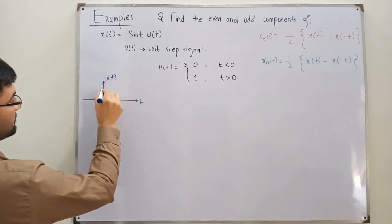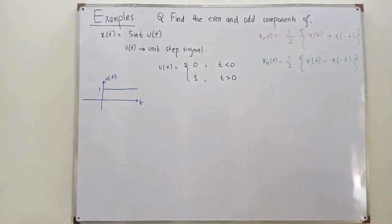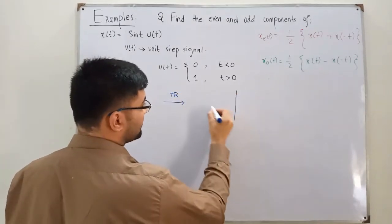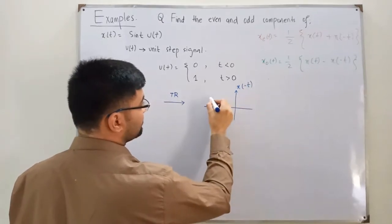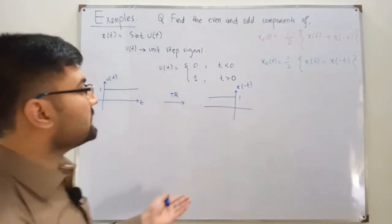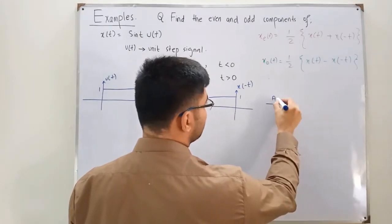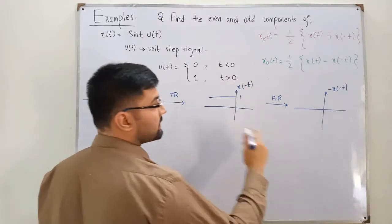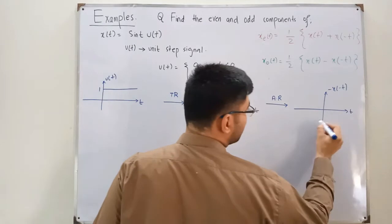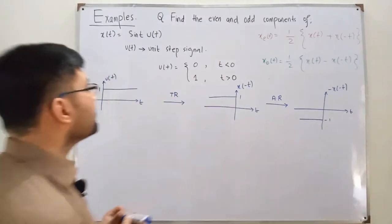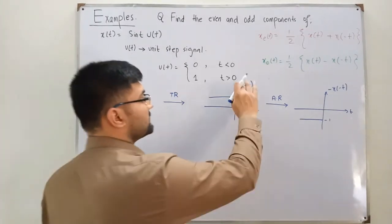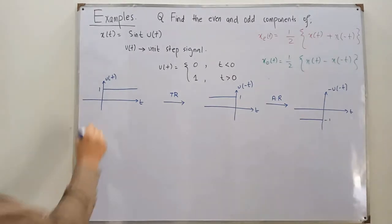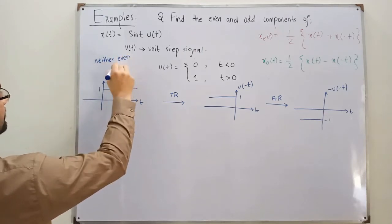If I draw the graphs: this is time, this is u(t) — it looks like this, value is 1. Now the time-reversed version x(-t) would be flipped to this side, also 1. Now negative times x(-t) means amplitude-reversed, so it flips around the time axis — the value becomes negative 1. Since u(t) equals neither u(-t) nor negative u(-t), u(t) is neither even nor odd.